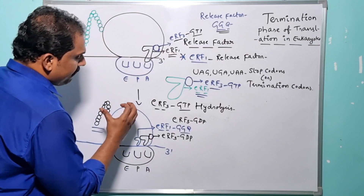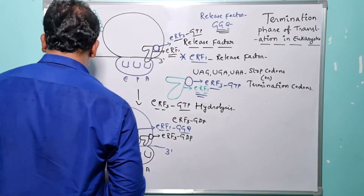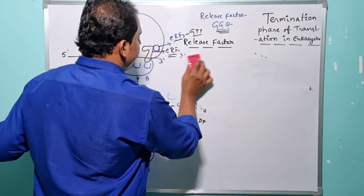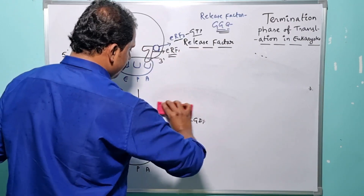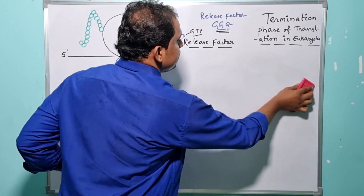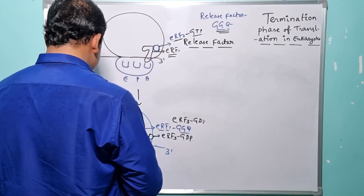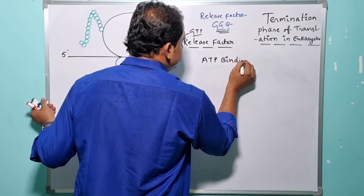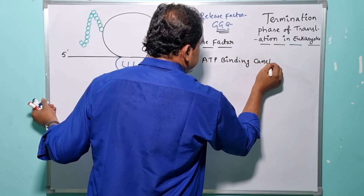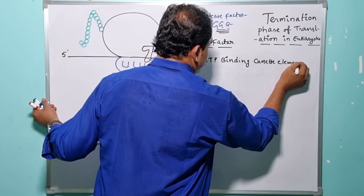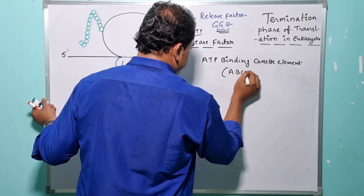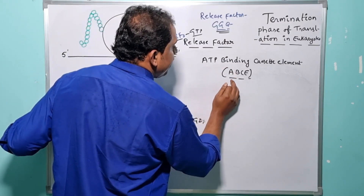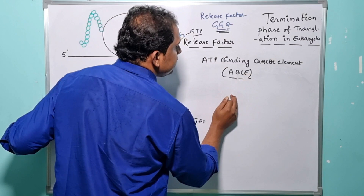Once the peptidyl transferase activity is successfully inhibited, in the very next step one more factor comes into the picture: the ATP binding cassette element, abbreviated as ABCE. The specific ATP binding cassette element remains in active conformation only when it is in association with ATP.